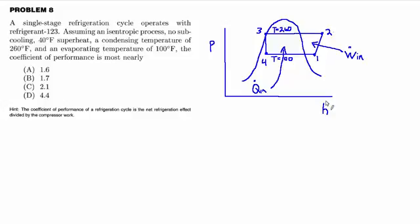Hi, welcome back to Mechanical PE Exam Prep. This is Dan Molloy, six-minute solutions problem number eight. A single-stage refrigeration cycle operates with refrigerant 123, assuming an isentropic process, no subcooling, 40 degrees of superheat, a condensing temperature of 260°F, and an evaporating temperature of 100°F. The coefficient of performance is most nearly what?